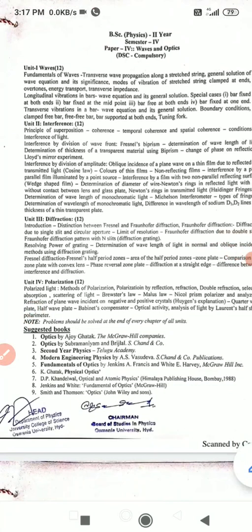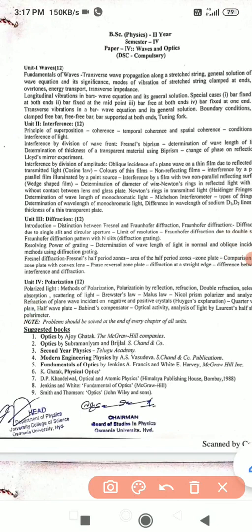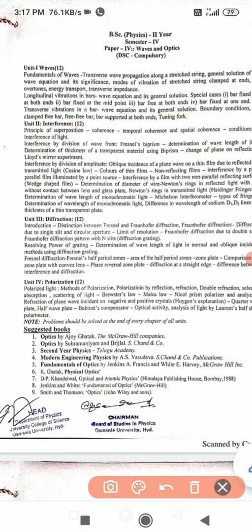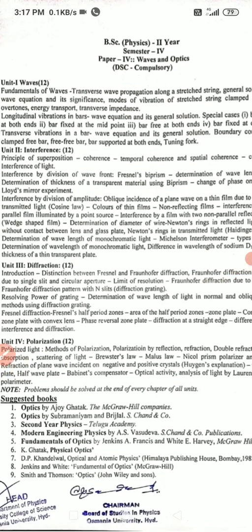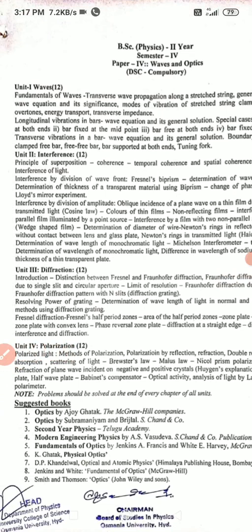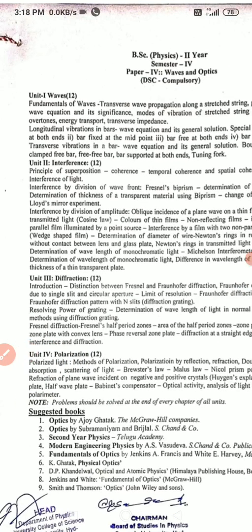In the second unit — interference — it is a huge unit. It is divided into two parts: interference by division of wavefront and interference by division of amplitude. My suggestion is to go for interference by division of wavefront. In that, you have to read principle of superposition, coherence, temporal coherence, spatial coherence, and conditions for interference of light — these are asked for short questions.